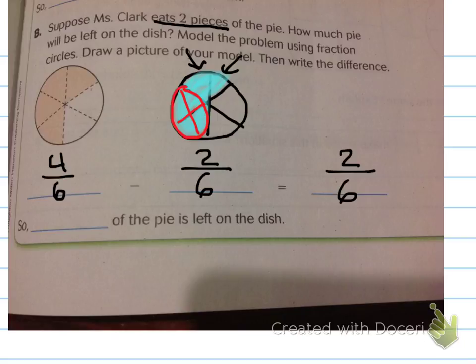Notice when we subtracted fractions, once again, the denominator stayed the same. The whole is still six pieces. What we did was just subtract the numerators. Four minus two equals two. So, how many pieces are left on the dish? Two-sixths of the pie is left on the dish.